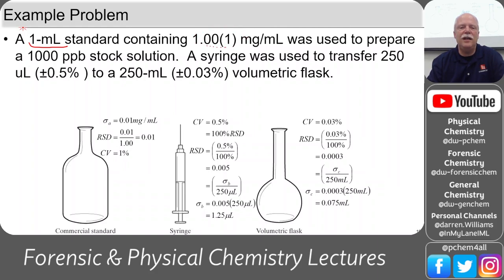How do we read this piece right here? 1.00 parentheses 1 milligram per mL. What does that mean? This right here is telling you something about the standard deviation. And this is the place value that it goes. So this is telling you that the uncertainty in this measurement, what do we want to call this? We'll just call it the uncertainty in the standard. I'll call it standard.